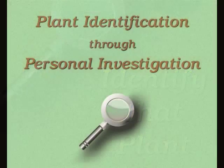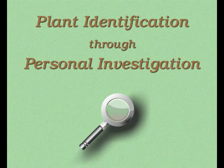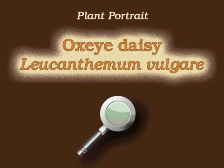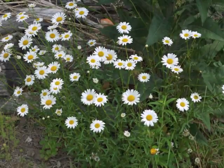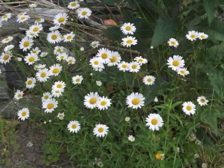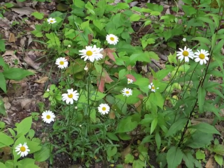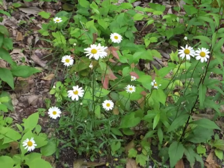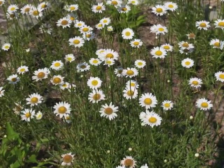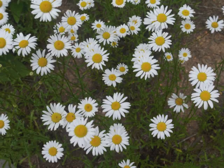You're watching Plant Identification Through Personal Investigation with Angeline Whitmire. This plant portrait is for oxeye daisy, Leucanthemum vulgare. Most of us notice oxeye daisy when it's blooming during the summer. It now grows throughout North America as a naturalized plant, originally from Eurasia. Oxeye daisy can be found in open fields and other sunny locations, such as along the sides of roadways.